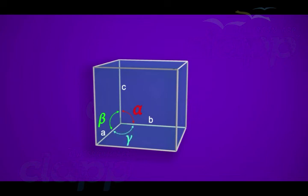Thus, a unit cell is characterized by six parameters: edges A, B, C and angles alpha, beta, gamma.